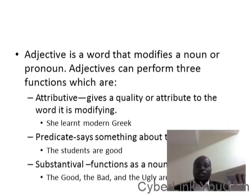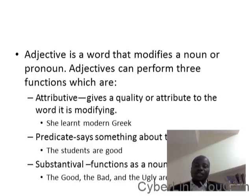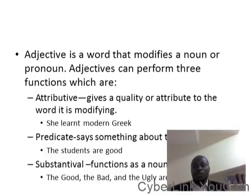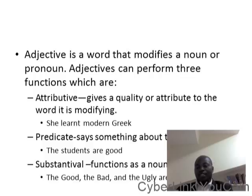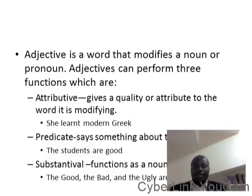An adjective is a word that modifies a noun or a pronoun. Adjectives can perform three functions: one is attributive, two is predicative, three is substantive. Attributive gives a quality or attribute to the word it is modifying — for example, she learned modern Greek. The word modern is modifying the noun Greek. Predicative says something about the noun.